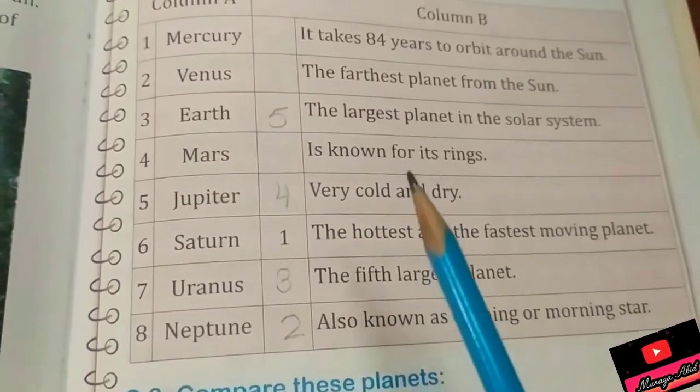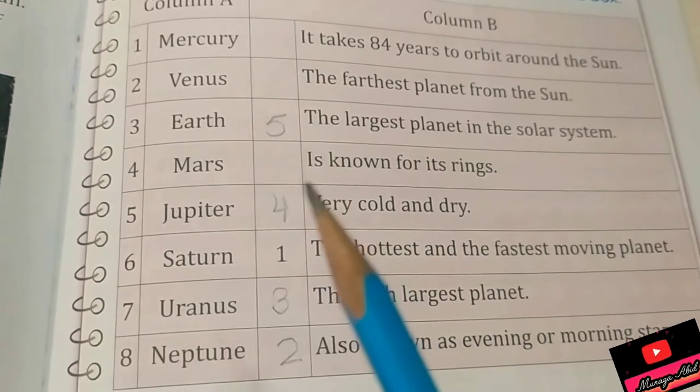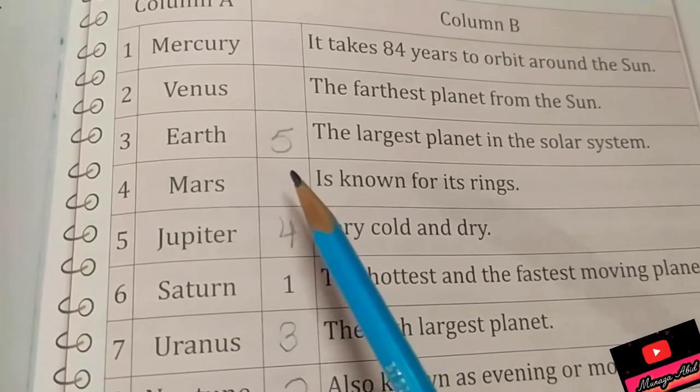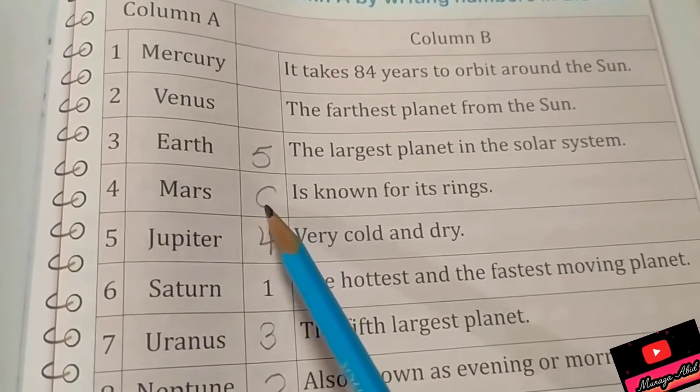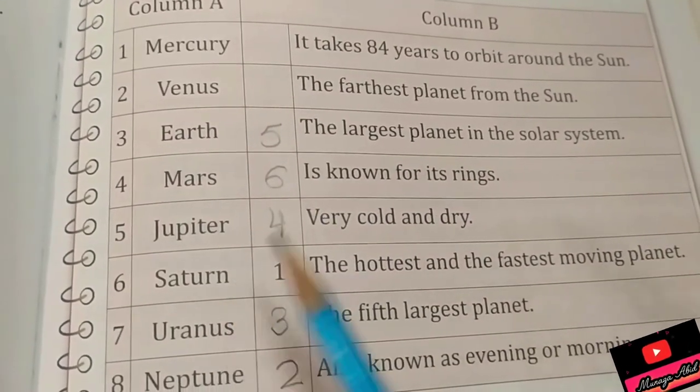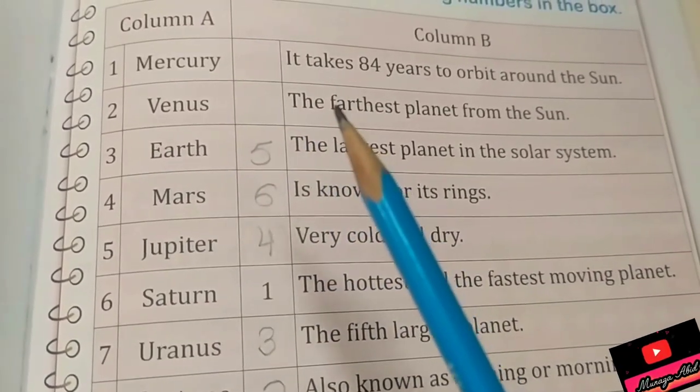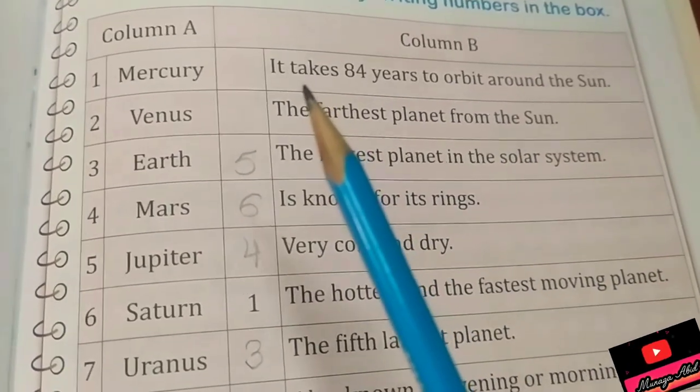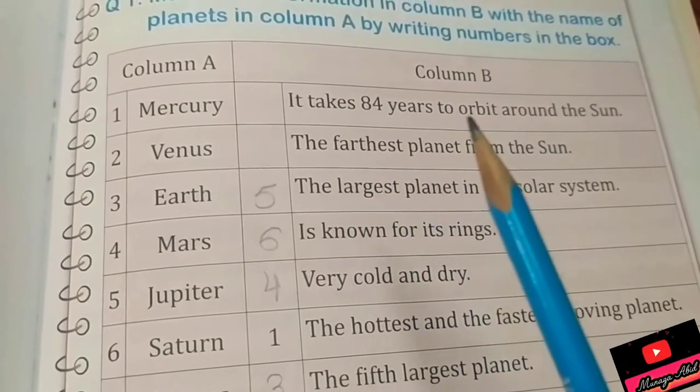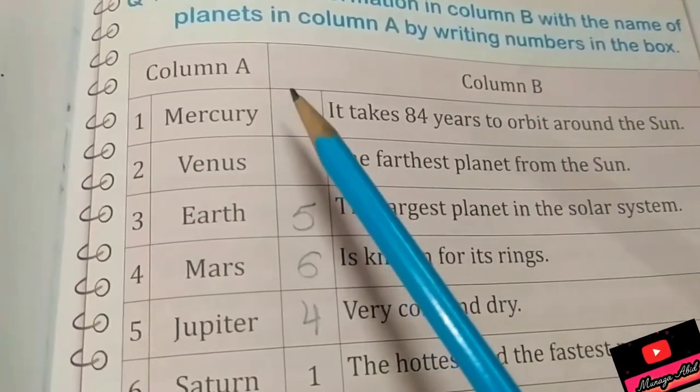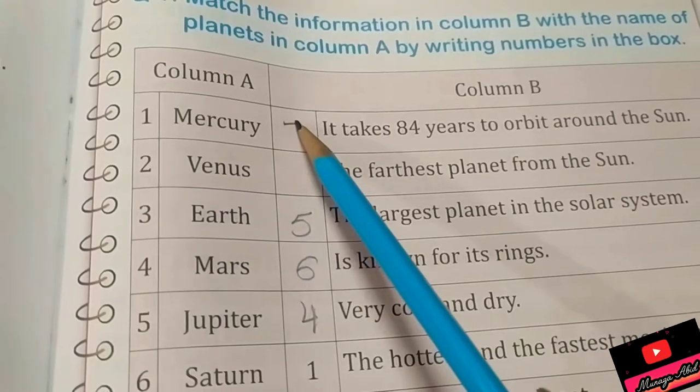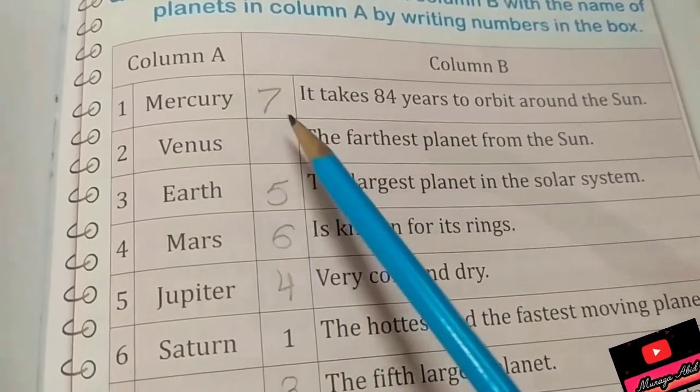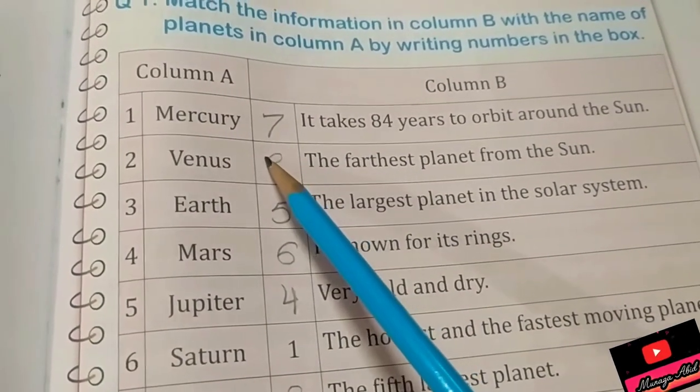Okay, now only three matching are left. It is known for its rings, it's six Saturn. Now just two are left. Saturn has many rings. Now the farthest planet from Sun. First we have to mark seven. It takes 84 years to orbit around Sun. Yes, this is Uranus, so here comes seven.